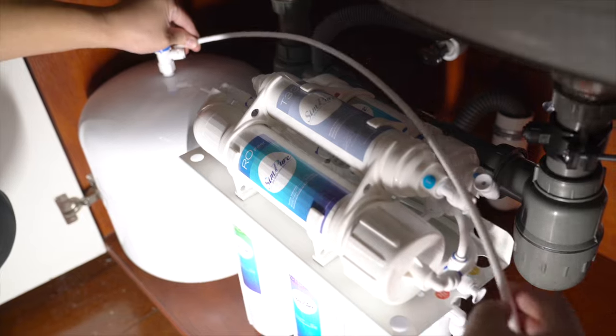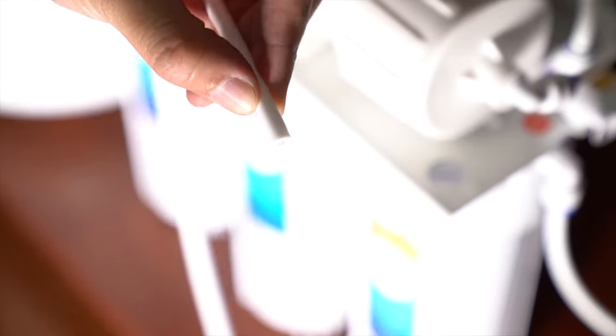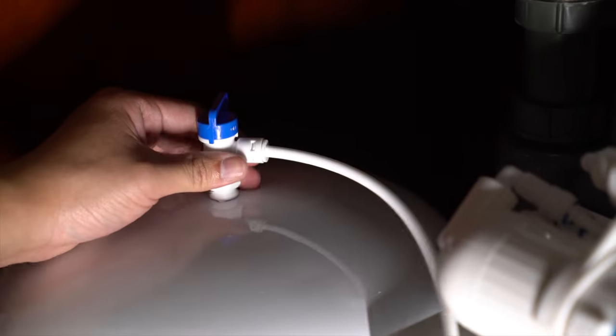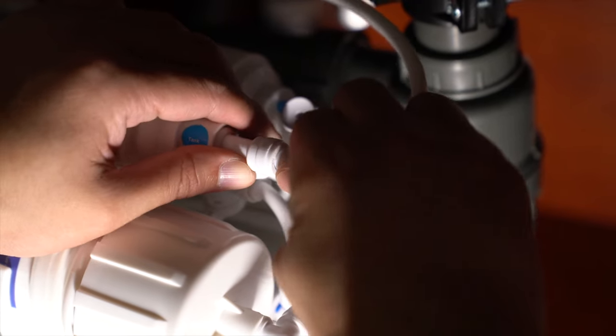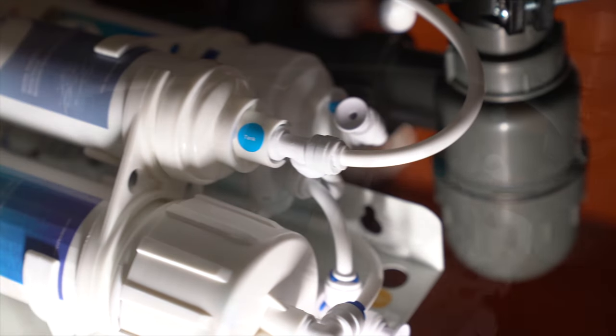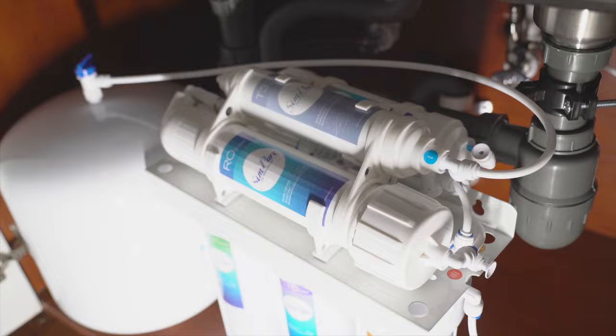Connecting the pressure storage tank. One, select the appropriate length of PE2 and cut it off. Insert it into the T1 pressure tank connection and the other end into the pressure tank ball valve. Two, fit blue locking clips to both tube connections.